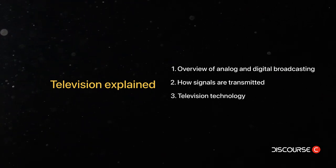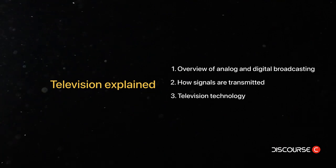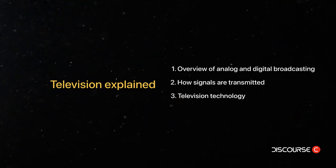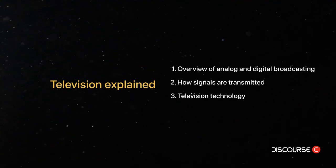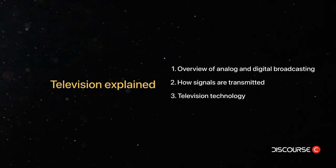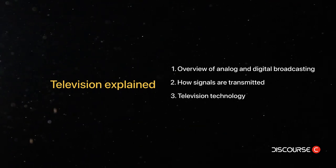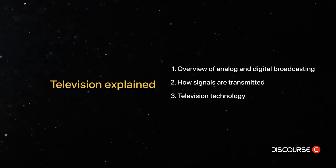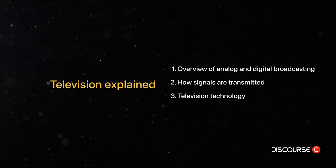Television technology has come a long way since the days of the cathode ray tube, or CRT, television. CRT televisions use a cathode ray tube to create and display the images on the screen. A cathode ray tube is a vacuum tube that contains an electron gun that produces a stream of electrons focused onto a phosphor-coated screen. The electrons excite the phosphors on the screen, causing them to emit light and create the images.